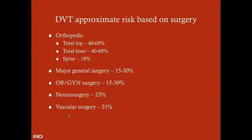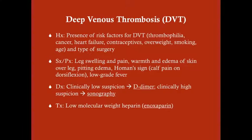Orthopedic surgery is the most risky for DVT, and it's going to be based on whether or not you can ambulate. These are ranges based on available studies. The history for DVT patients includes risk factors such as known or unknown thrombophilia, cancer, heart failure, use of contraceptives — estrogen increases your risk of coagulation — being overweight, smoking, age greater than 60, and of course the type of surgery.